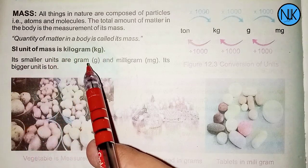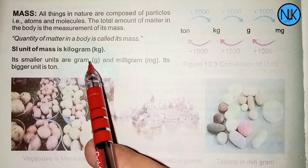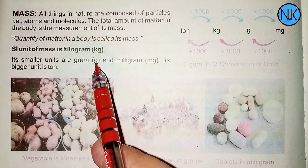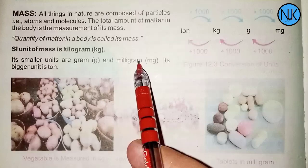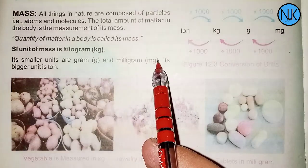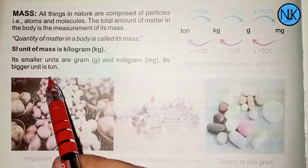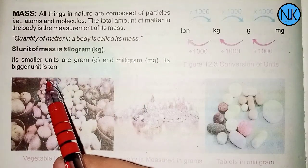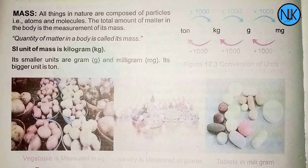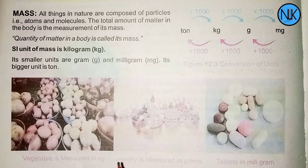Smaller units are gram and milligram. The bigger unit is ton. Vegetables are measured in kilograms, jewelry is measured in grams, and tablets are measured in milligrams.